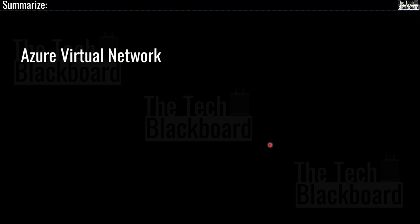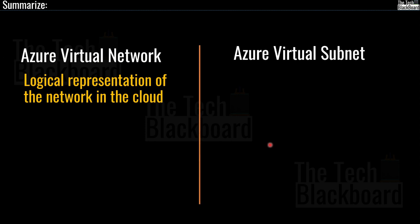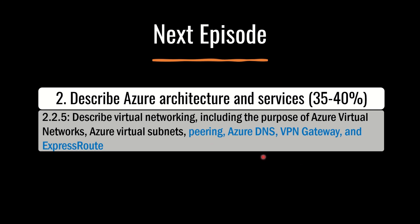Let's summarize what we learned today. First, we talked about Azure virtual network, which is a logical representation of a network in the cloud. Then we discussed Azure subnets, which are purposed to allow isolation, segmentation, and to enable communication, filtering, and routing between Azure and on-premises resources. In the next episode we will cover peering, Azure DNS, VPN Gateway, and ExpressRoute.